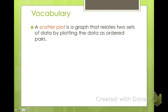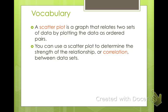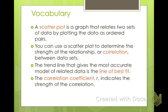Let's start with our vocabulary. A scatter plot is a graph that relates two sets of data by plotting data as ordered pairs. I'm pretty sure you've probably done these before. When you make a scatter plot, you determine the strength of a relationship or the correlation between data sets. Sometimes there's a really strong correlation, like all the data points fit on a line. Sometimes there's a weak correlation or no correlation—it's just all very random. The line that you draw through that data is called your line of best fit. Your correlation coefficient, labeled with r, indicates the strength of the correlation. The closer it is to 1, the better the correlation. The further from 1, the worse the correlation.